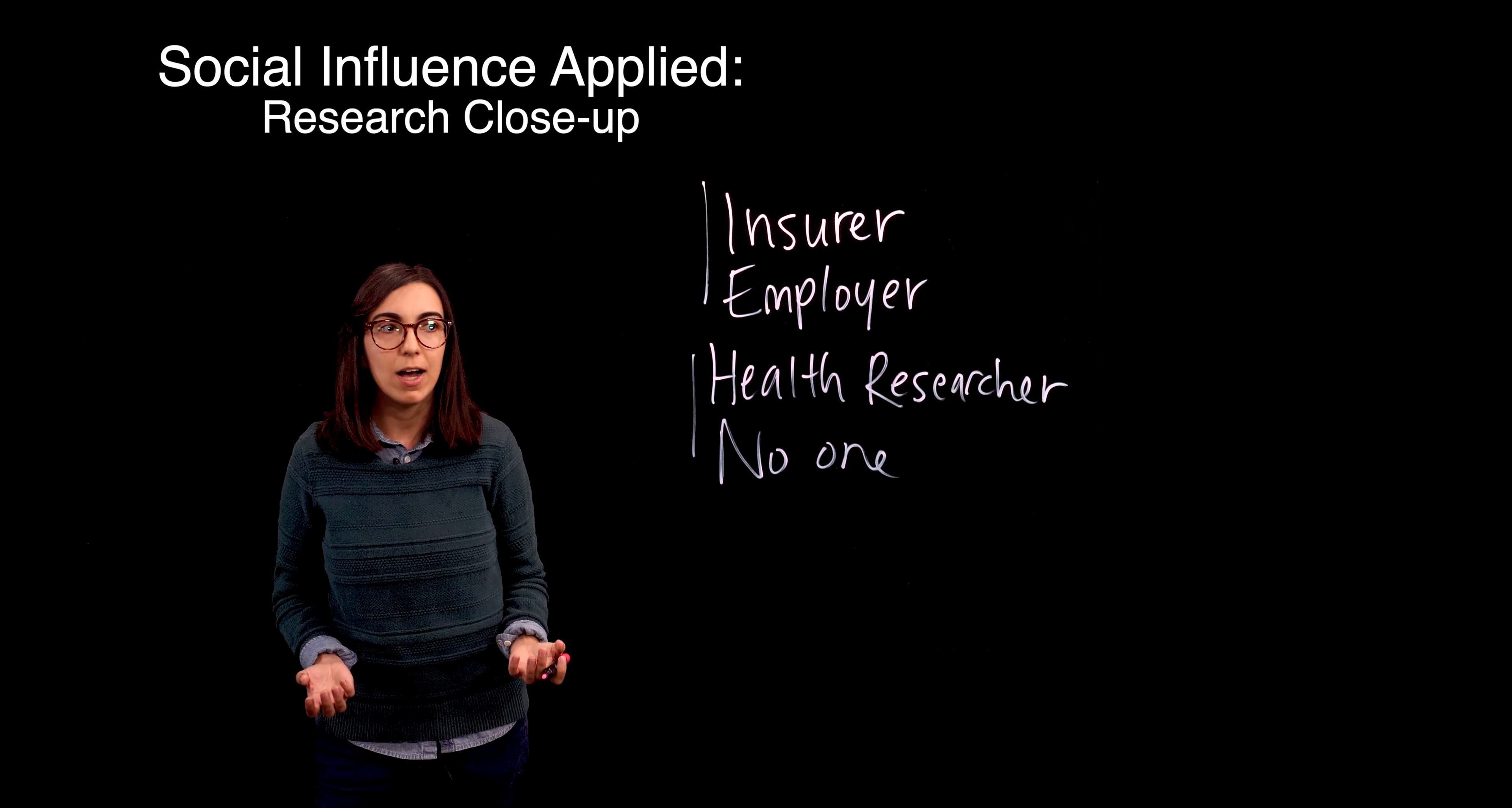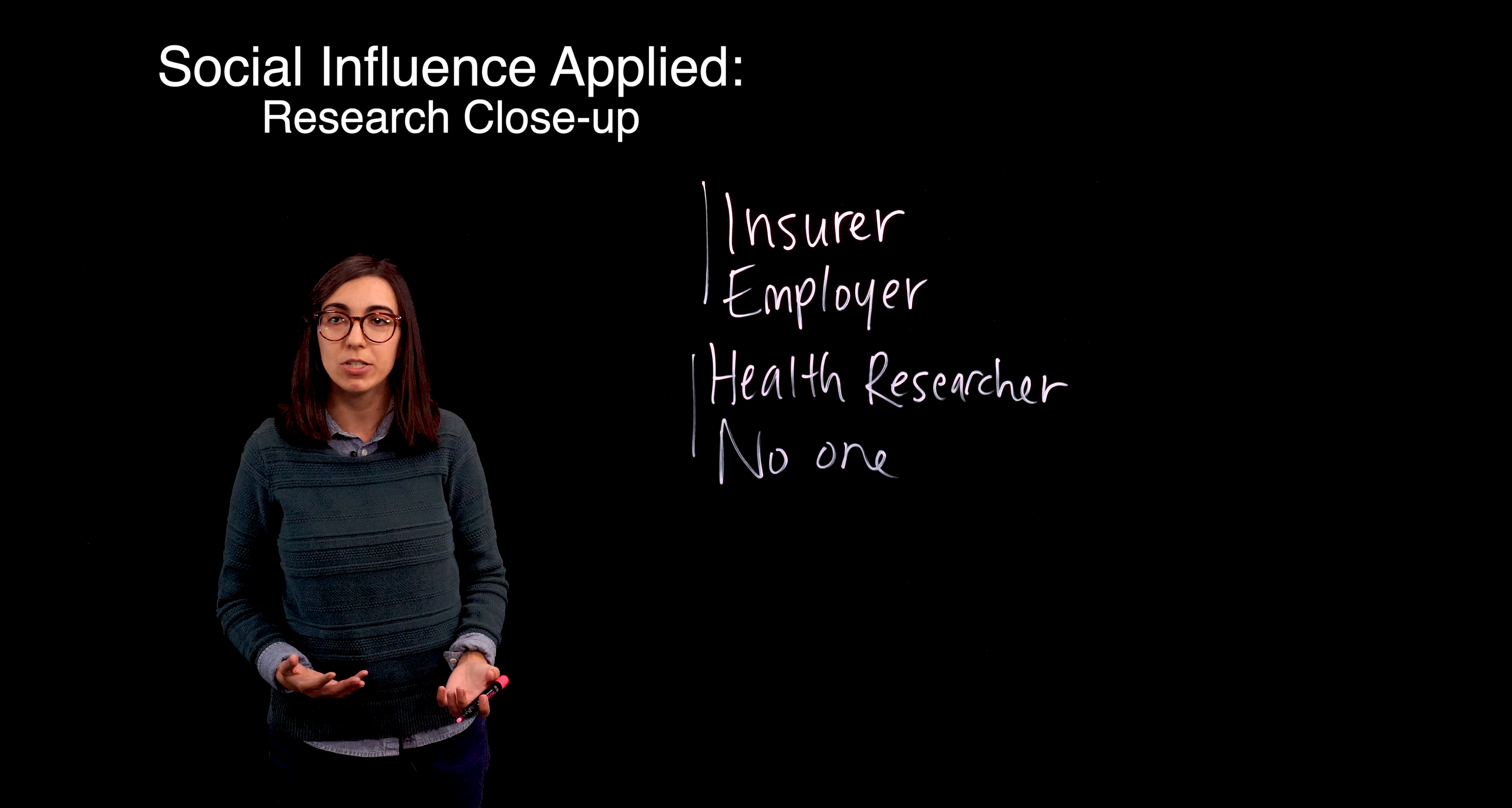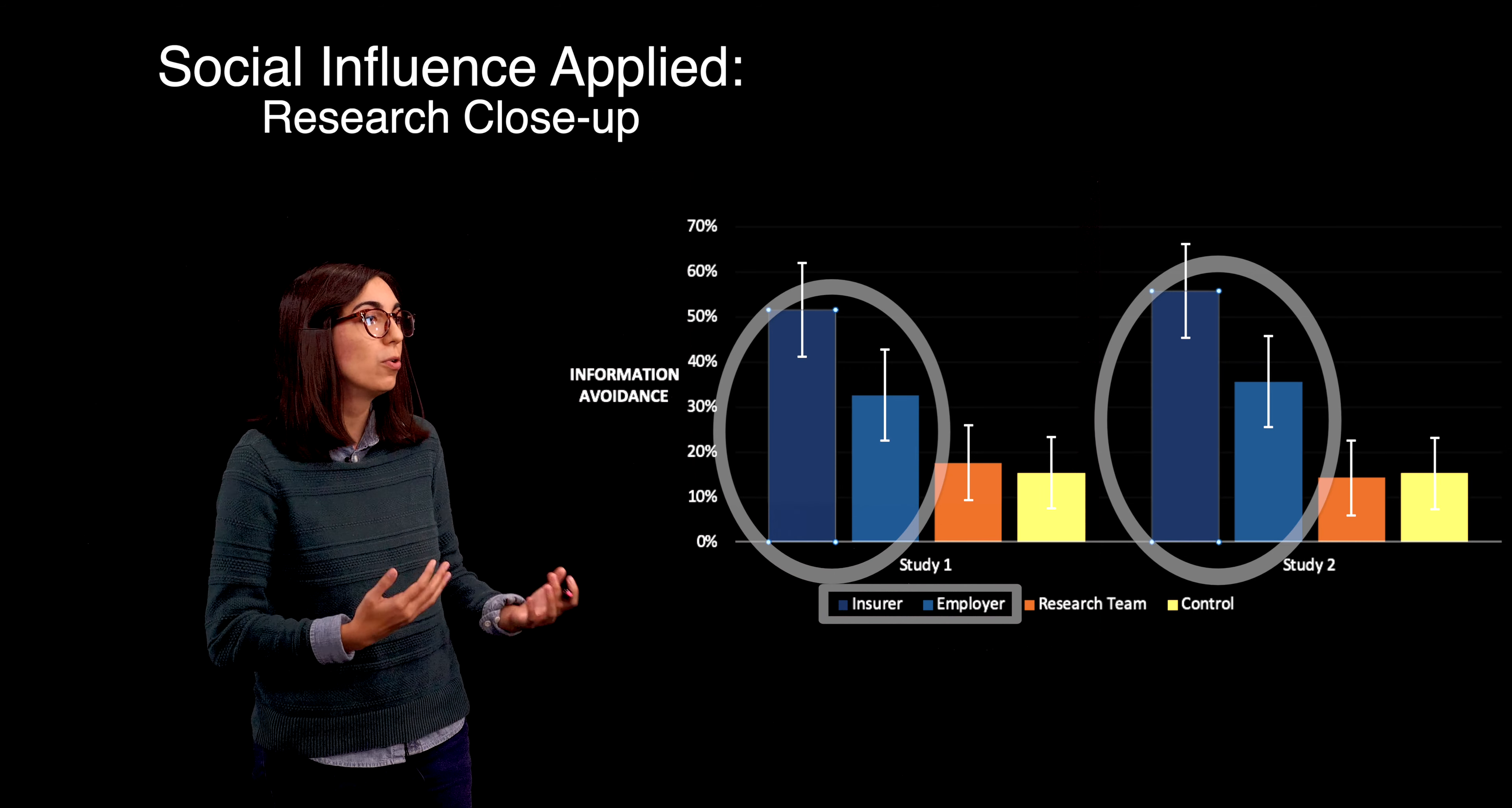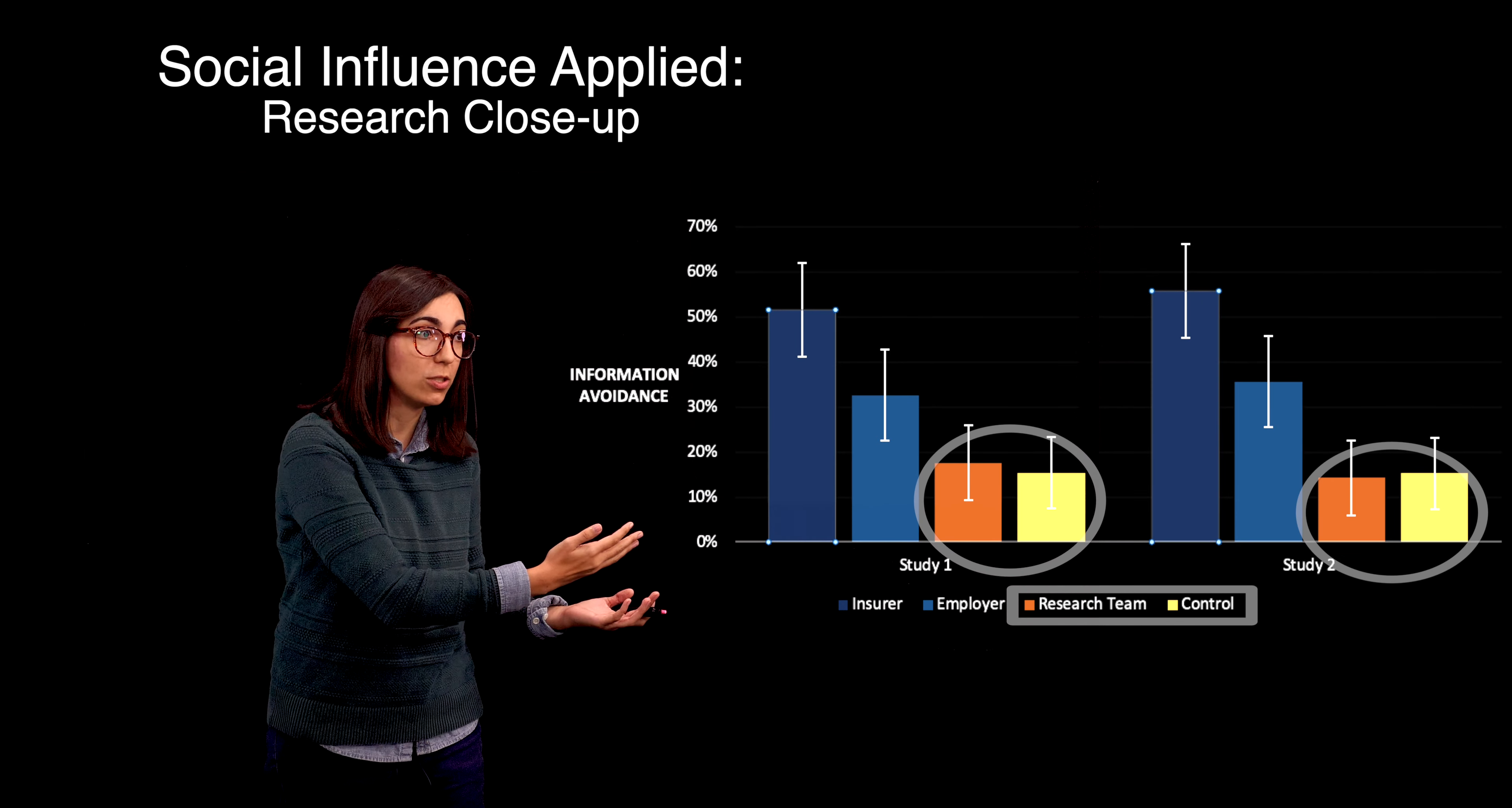So, what do we find? Do participants actually differ in their decisions to seek or avoid information, depending on who has access to the information? It turns out, yes. Participants who thought their information would be sent to insurers or employers were far more likely to avoid their health risk feedback than participants who thought their information would be sent to health researchers or to no one.